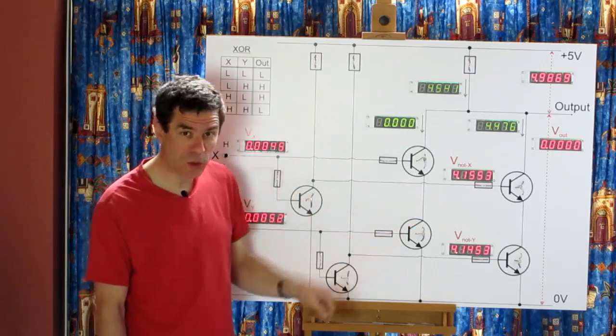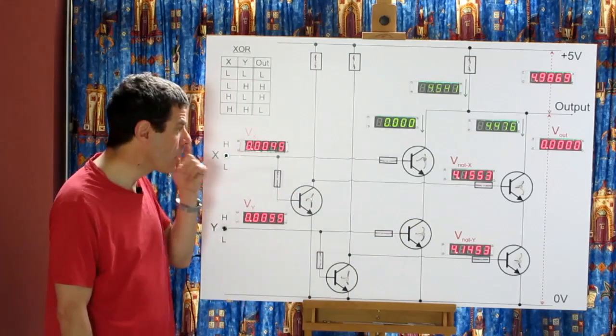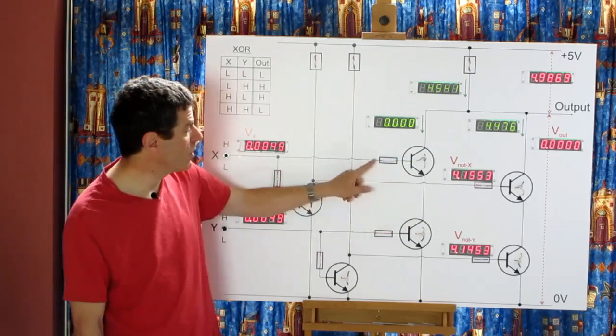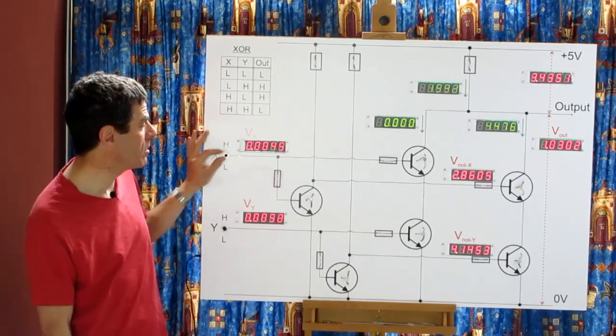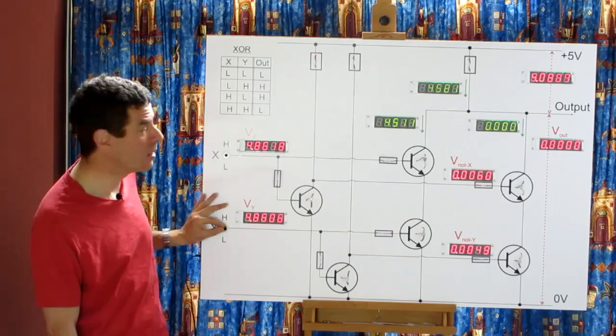This pair of transistors is also in series. Current will only flow through here if both of their inputs are high, which is when X is high and Y is high.